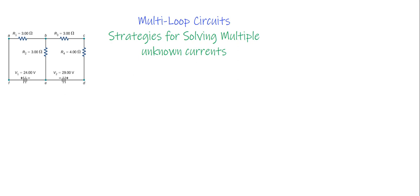Welcome to this video on multi-loop circuit strategies for solving multiple unknown currents. In this video, we're going to put together all the ideas that we've learned so far about the junction rule, Kirchhoff's loop rule, and we're going to use those to solve for a situation when we have a current that is splitting and rejoining at different junctions so that there's multiple unknown values throughout each branch of the circuit.